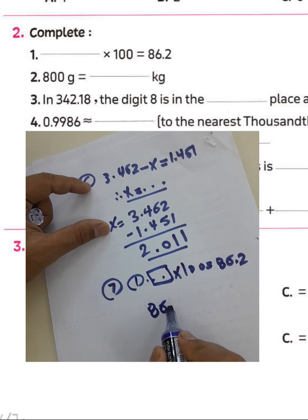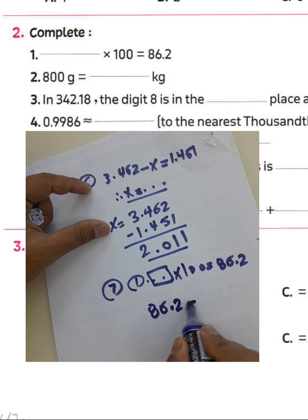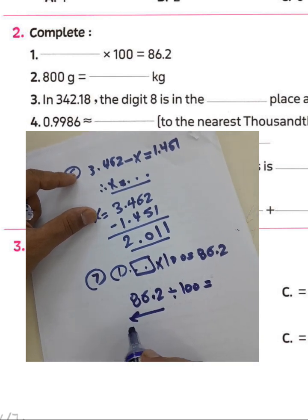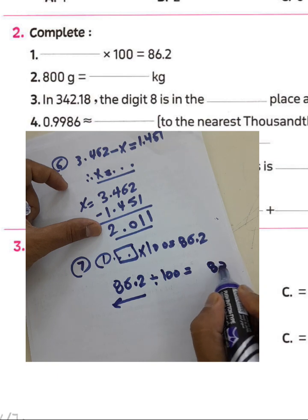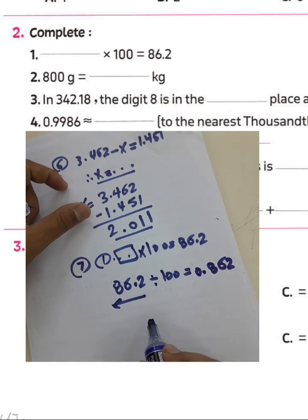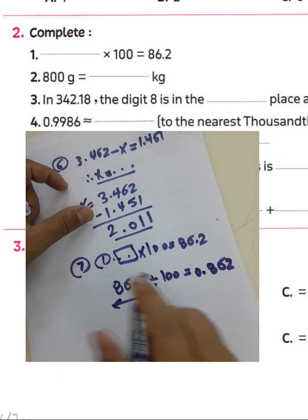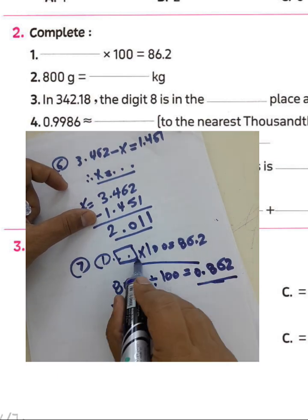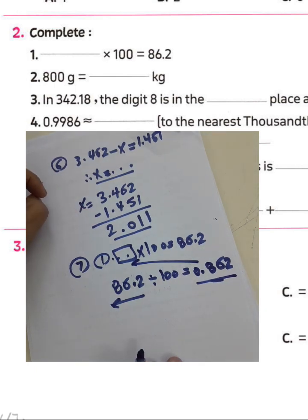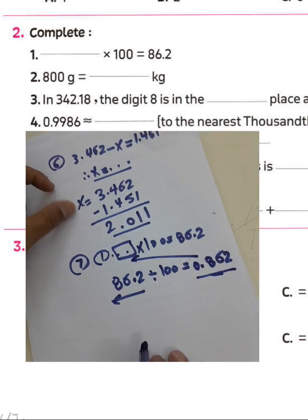86.2 divided by 100 — you must move the decimal point to the left by two places. Write 8, 6, 2 and move the point, giving 0.862. So this number is 0.862.